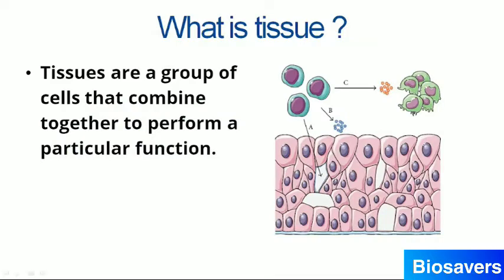So what is tissue? We already know that the cell is the fundamental unit of life. But can a single cell perform all the body functions for a multicellular body like us, or plants, or animals? Obviously no, because we have many functions — respiration, excretion, transportation, reproduction, digestion. A single cell or group of cells is not able to perform all those functions. So we require more cells, and that is where tissues come in. Tissues are basically the group of cells that combine to perform a particular function.